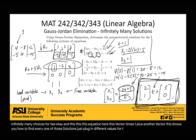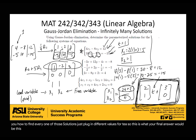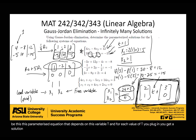This parameterized equation — a vector times t plus another constant vector — shows you how to find every one of those solutions: just plug in different values for t. This is your final answer. That's the idea with infinitely many solutions. Let's see it in action with the next two examples.